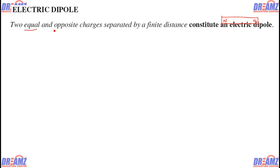Welcome students. That is the electric dipole. Dipole means two poles — it is a basic concept. In the case of a magnet, it is also a dipole because a magnet has two poles. Consider this bar magnet: this is the north pole and this is the south pole. Similarly, in an electric dipole, two equal and opposite charges are separated by a finite distance — that constitutes an electric dipole.